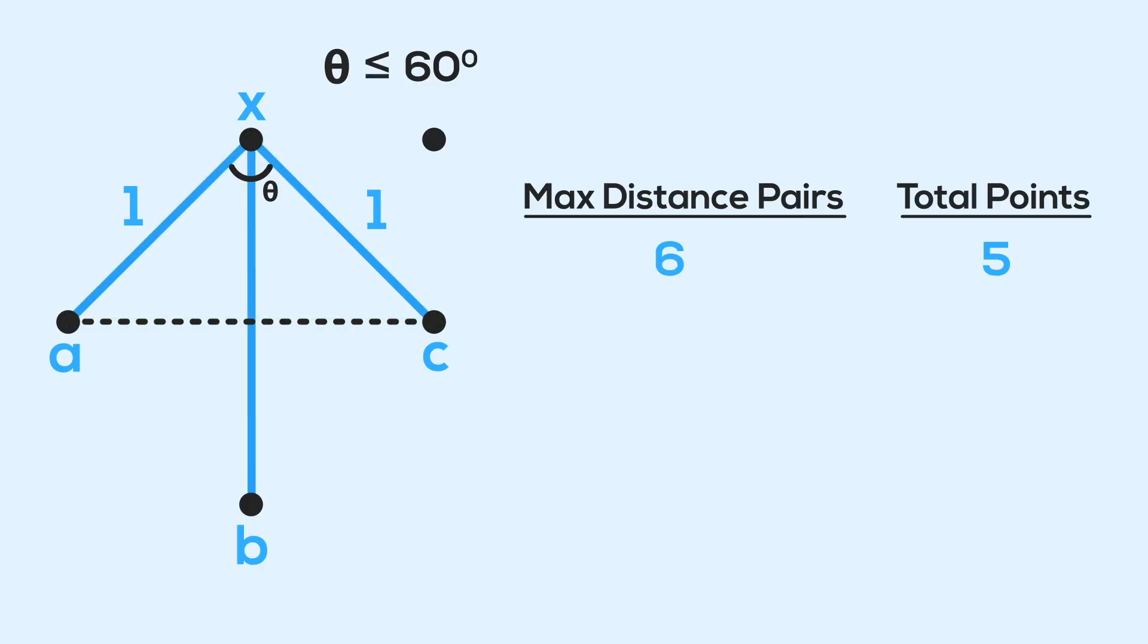As we said, the max distance between any two points must be 1. So AXC is less than or equal to 60 degrees, which means the line XB is in between the other two, XA and XC.